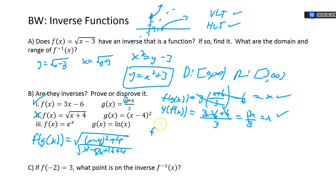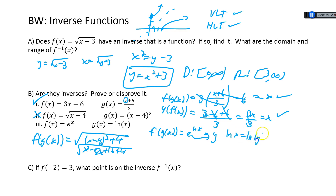Number three: f(x) is e to the x and g(x) is ln. Let's do f(g(x)): that would be e to the power of ln(x). If we set this equal to y and write it in log form, we have ln x equals ln y, so the arguments must be the same — that is indeed x. Going the other way: natural log of e to the x — we can move the x to the front: x times ln(e). ln(e) is 1, so that's x. They are inverses.